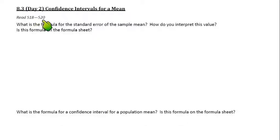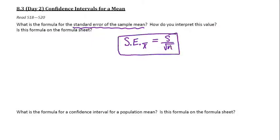8.3 Day 2, we're still talking about confidence intervals for means. The first part here says, what is the formula for the standard error of the sample mean? That's S.E. with a subscript of X bar. Instead of using sigma over the square root of N, we're going to use little s, which is the sample standard deviation over the square root of N, which is the sample size.